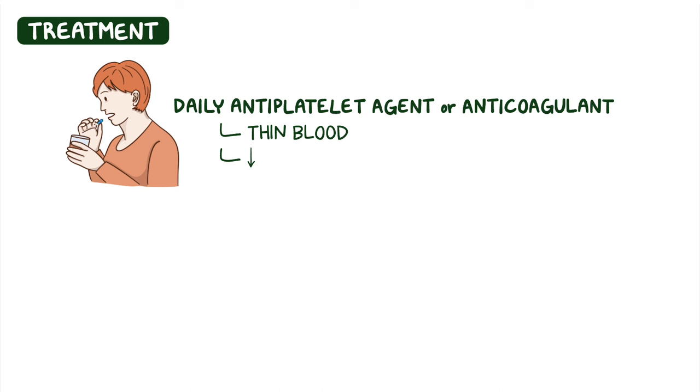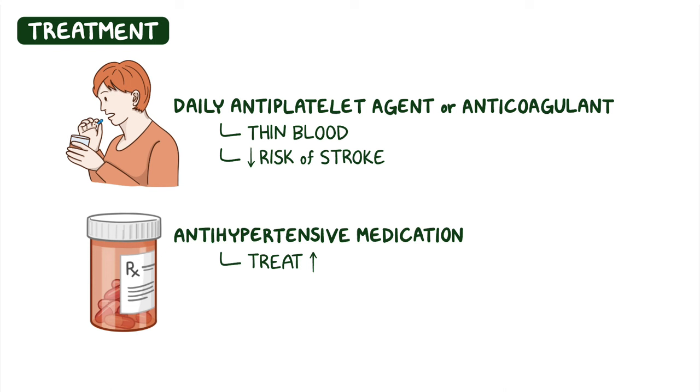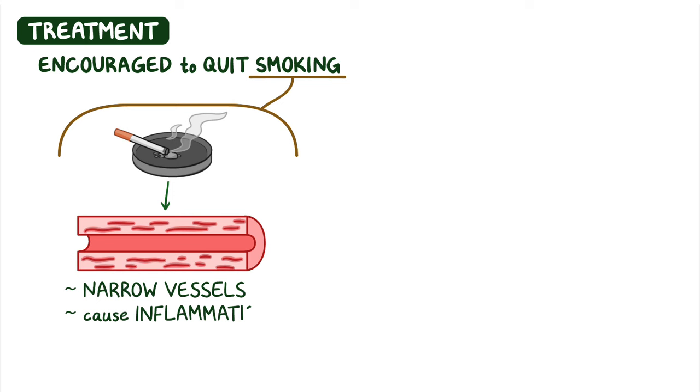Currently, there is no cure for fibromuscular dysplasia. Some individuals may take a daily antiplatelet agent or an anticoagulant to thin the blood and reduce the risk of stroke, and antihypertensive medications may be used to treat high blood pressure. Individuals who smoke should be encouraged to quit, as smoking worsens the disease by narrowing vessels further and causing inflammation.